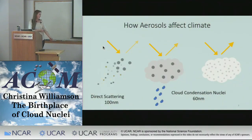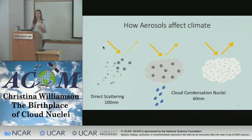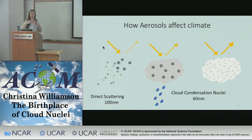Aerosols exert a radiative forcing in two ways. They can directly scatter sunlight if they're about 100 nanometers and above, or they can act as cloud condensation nuclei — the seeds on which cloud droplets form. With few CCN, a cloud is made up of just a few larger droplets and precipitates out relatively fast. With many aerosols acting as CCN, the cloud is made up of lots of smaller droplets, is relatively bright, reflects more sunlight, and precipitates later, having a greater impact on albedo because it hangs around longer.